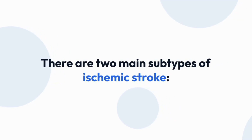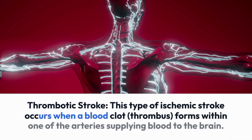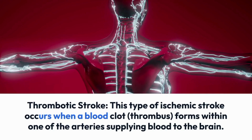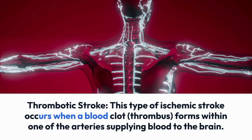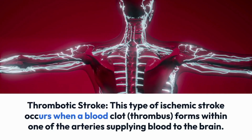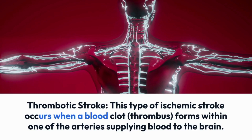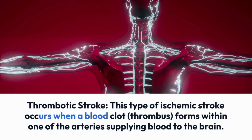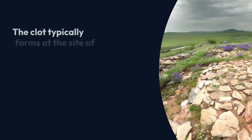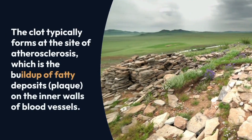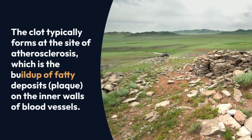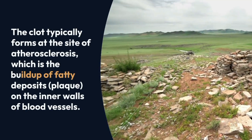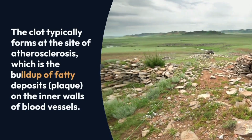There are two main subtypes of ischemic stroke. Thrombotic stroke: this type of ischemic stroke occurs when a blood clot, or thrombus, forms within one of the arteries supplying blood to the brain. The clot typically forms at the site of atherosclerosis, which is the buildup of fatty deposits, or plaque, on the inner walls of blood vessels.